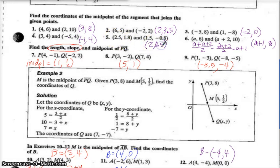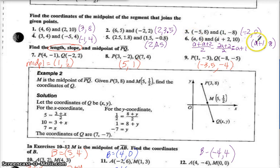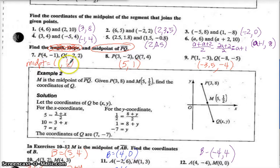Number 4 — 3 plus negative 5 is negative 2 divided by 2 is negative 1, and 4 plus 4 is 8 divided by 2 is 4. Number 5, you should have gotten 2 and 0.5. Number 6 was the interesting one — you had a plus (a plus 2), that's 2a plus 2 divided by 2. We can divide each by 2 to get a plus 1. So the x-coordinate of the midpoint is a plus 1, and 6 plus 10 divided by 2 is 8. Number 7 through 9 — the midpoints were: 1 and ½ (or 0.5), then 5 and 1, and negative 3.5 and negative 4.